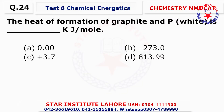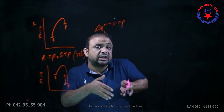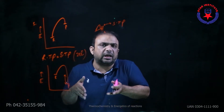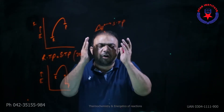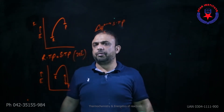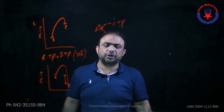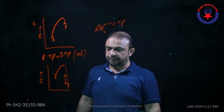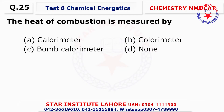Question number twenty-four: The heat of formation for graphite and P-white (white phosphorus) — the first naturally occurring form has a heat of formation of zero. So the choice is A.